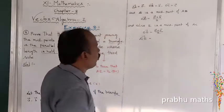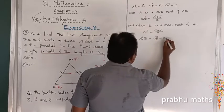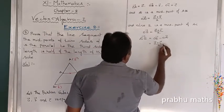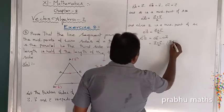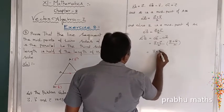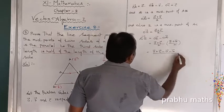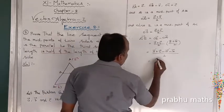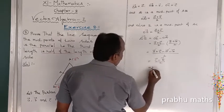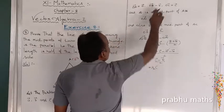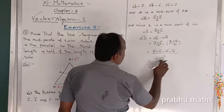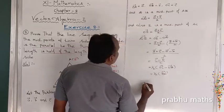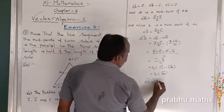Therefore, to find DE vector: DE vector equals OE vector minus OD vector. Substituting: OE equals (A + C)/2 and OD equals (A + B)/2. So DE equals (A + C)/2 minus (A + B)/2, which simplifies to (C minus B)/2, equal to one-half times (OC minus OB), which equals one-half times BC vector.